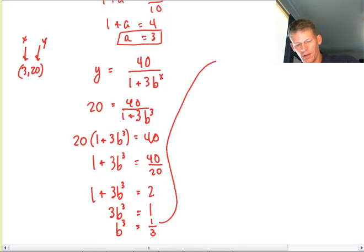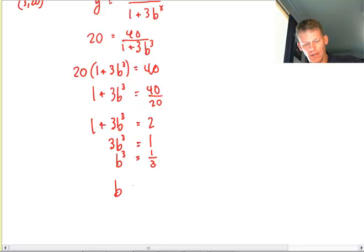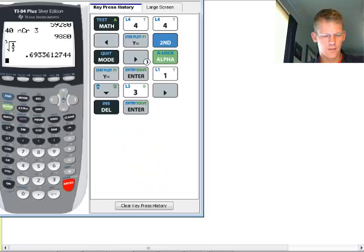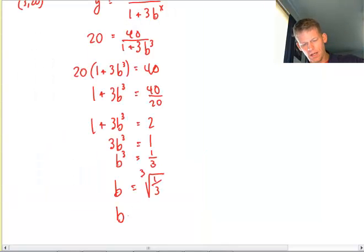And then that will result in b is equal to the cube root of 1 third, and it's 0.693. So b is going to be 0.693.